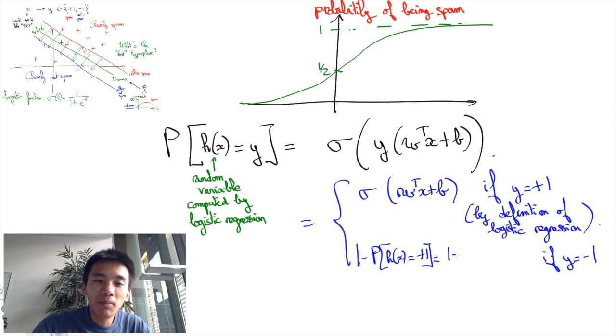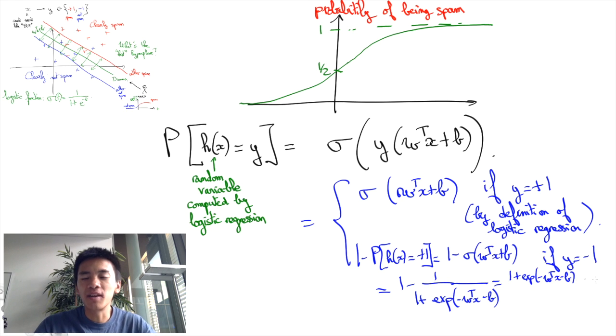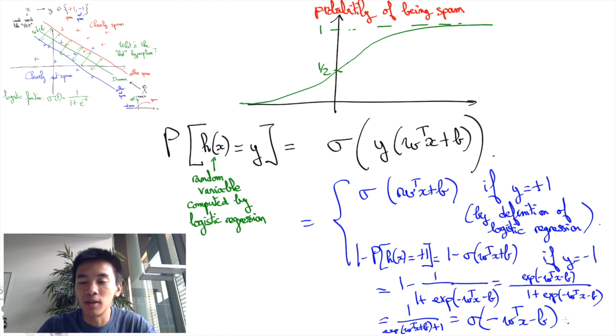And this is equal to 1 minus sigma of w transpose x plus b. And basic computations will tell you that this is actually equal to sigma of minus w transpose x minus b.